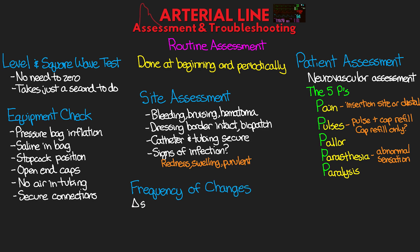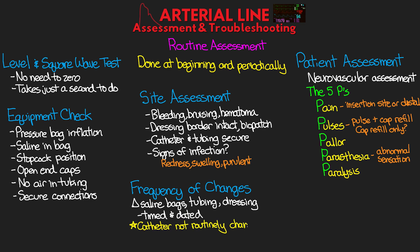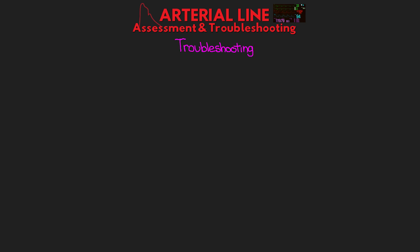Also assess the frequency of any changes needed — you'll need to change out the bag of saline, pressure tubing, transducer, and dressing. Frequency varies by facility policy, ranging from every 72 hours to every 96 hours to every 7 days. Ensure everything is timed and dated. Note that the catheter itself is not routinely changed out, and if the dressing is no longer intact, change it promptly to maintain a proper infection barrier.